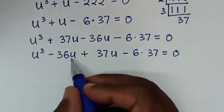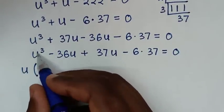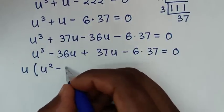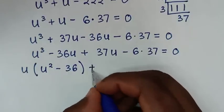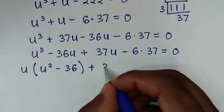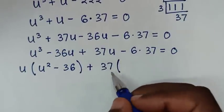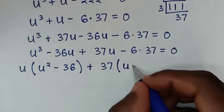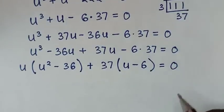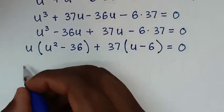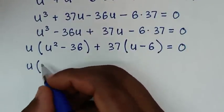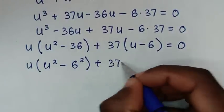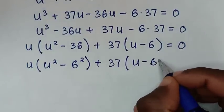In the next step, u is common in the first group: u³ divided by u is u², and negative 36u divided by u is negative 36. Then 37 is common in the second group: 37u divided by 37 is u, and 6 times 37 divided by 37 is 6. So we get u(u² minus 36) plus 37(u minus 6) equals 0.